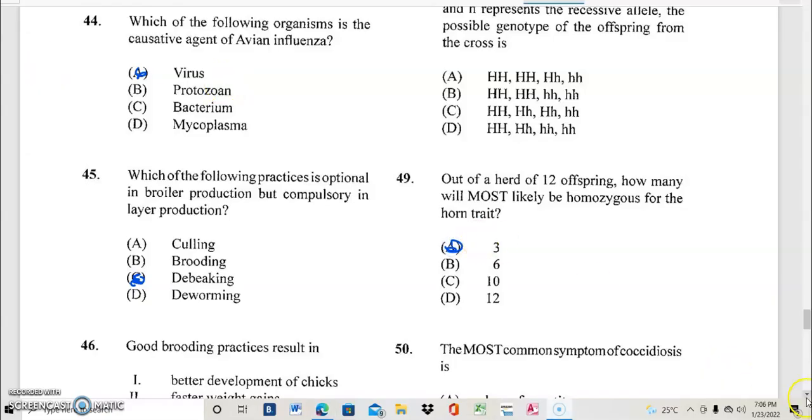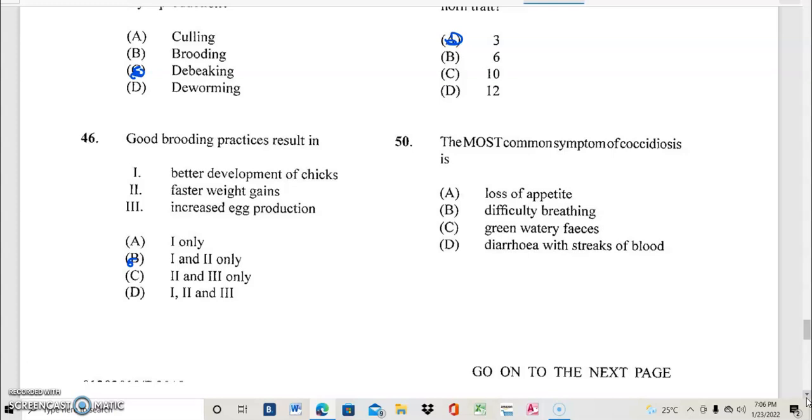Question 50. And I hope you are getting them right. The most common symptom of coccidiosis is? And if your answer to 50 is, let me hear your answer. D, diarrhea with streaks of blood. You are definitely correct. You are getting it right.